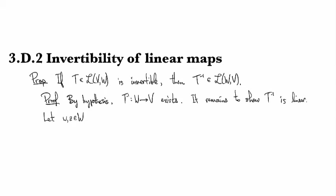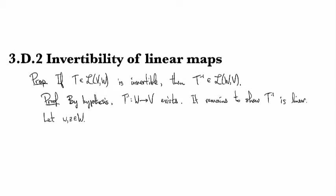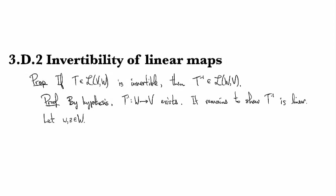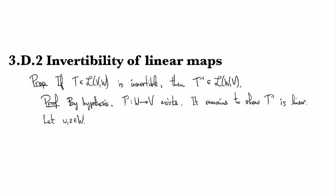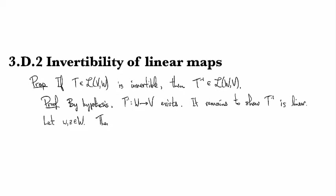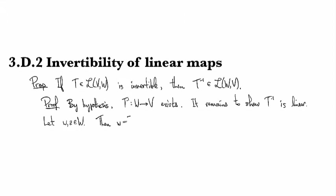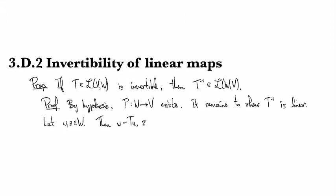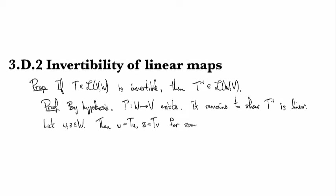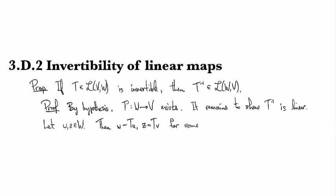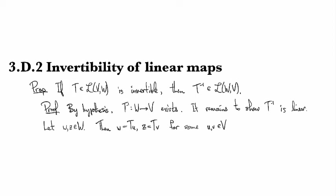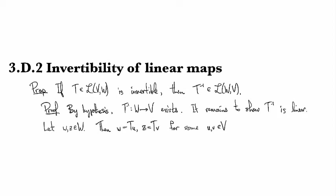So we'll take two things from W. Now I know that T is invertible, so in particular it's surjective. So that means that W looks like T(u) and Z looks like T(v) for some u and v in V. And in fact, those are unique because T is injective, but we won't quite need that here.